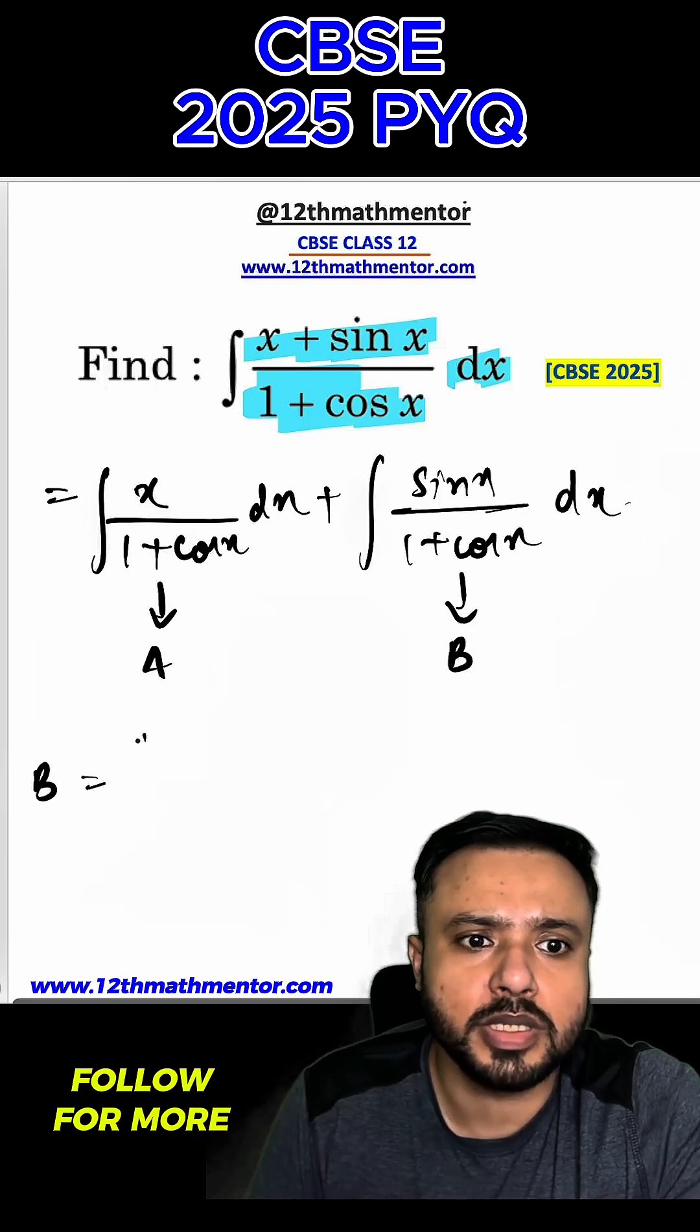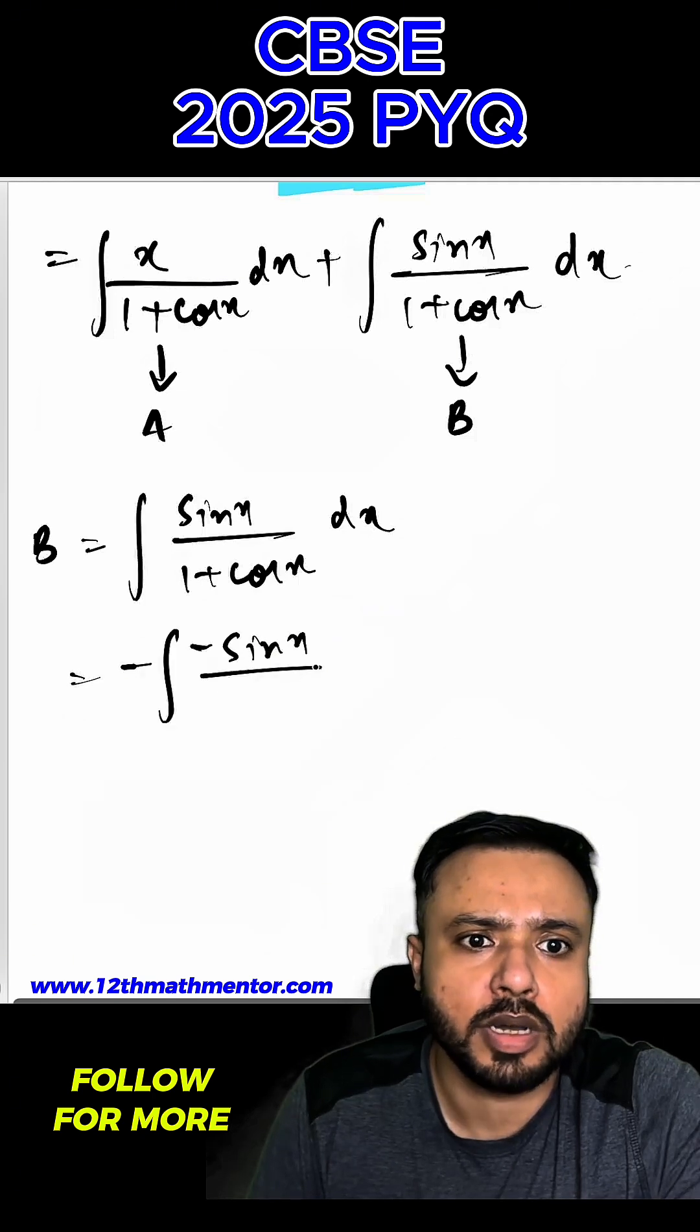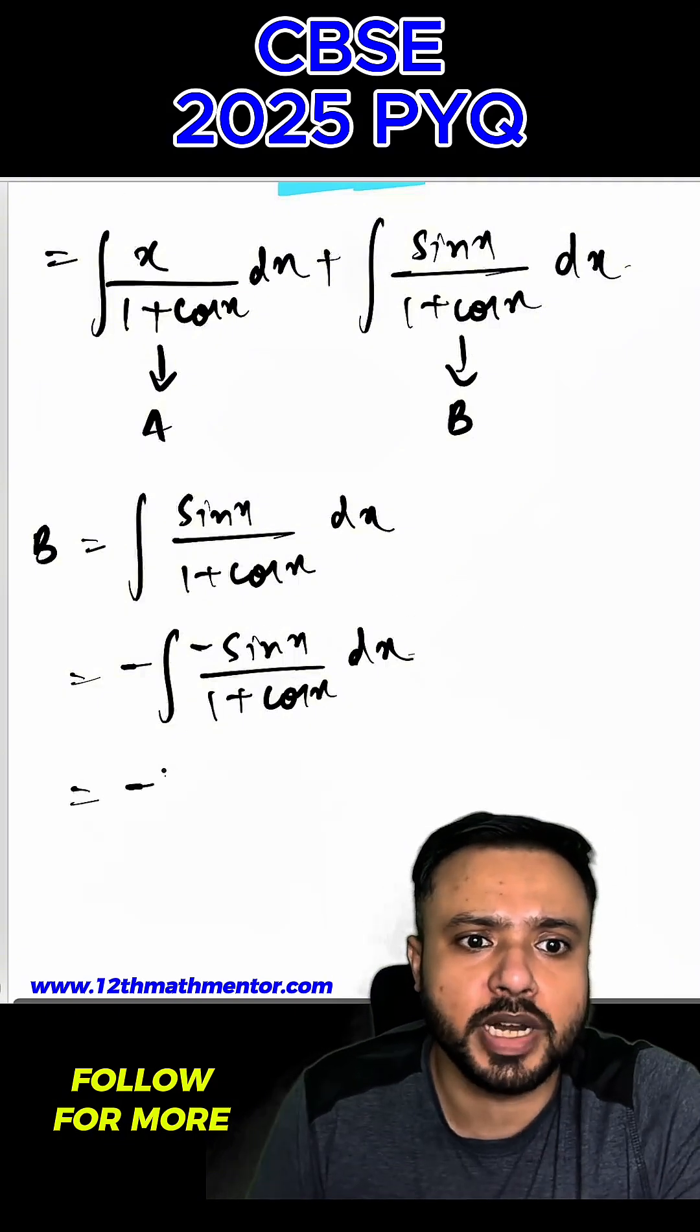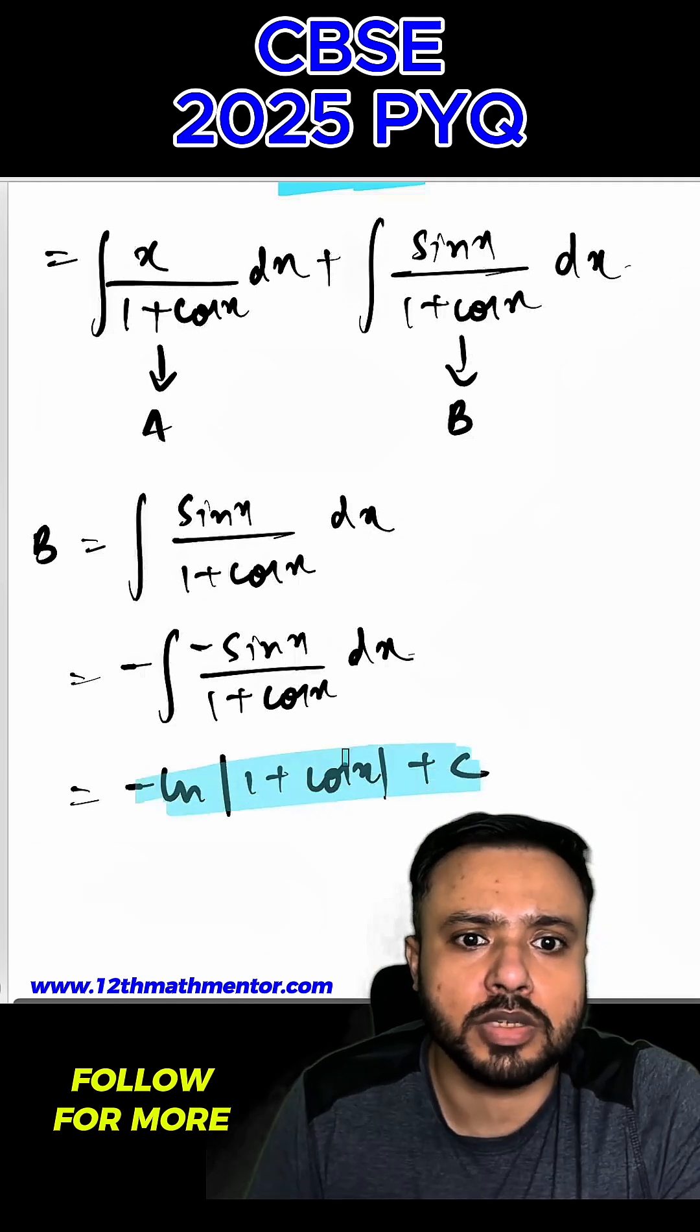First we will solve B. B is integral of sin x upon 1 plus cos x dx. I can write it as negative of negative sin x upon 1 plus cos x dx. Clearly you can see that the derivative of denominator is present here in the numerator. So the integral of this would be negative ln 1 plus cos x plus c. This is the answer for B.